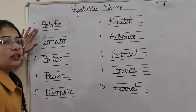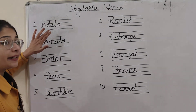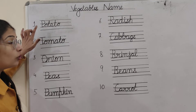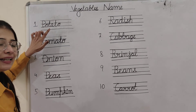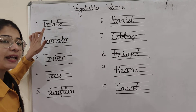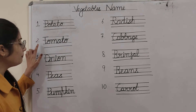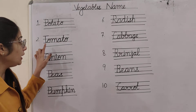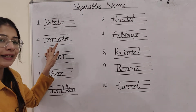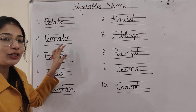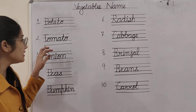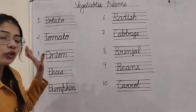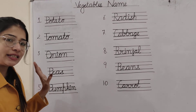Number 1 is potato. What is this? Potato. P-O-T-A-T-O. Potato. Now number 2 is tomato. T-O-M-A-T-O. Tomato. What is this? T-O-M-A-T-O. Tomato. Easy tha bilkul?